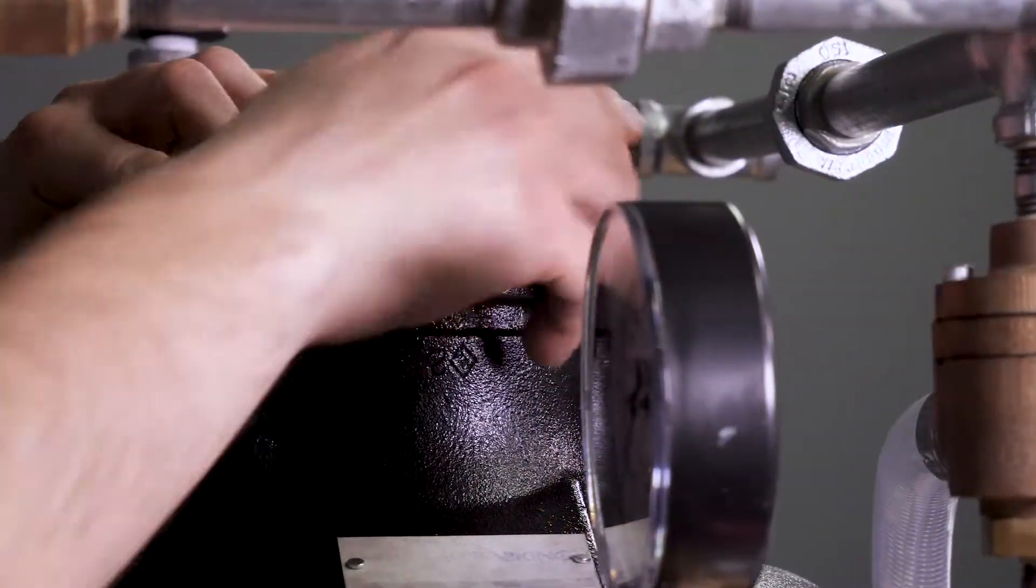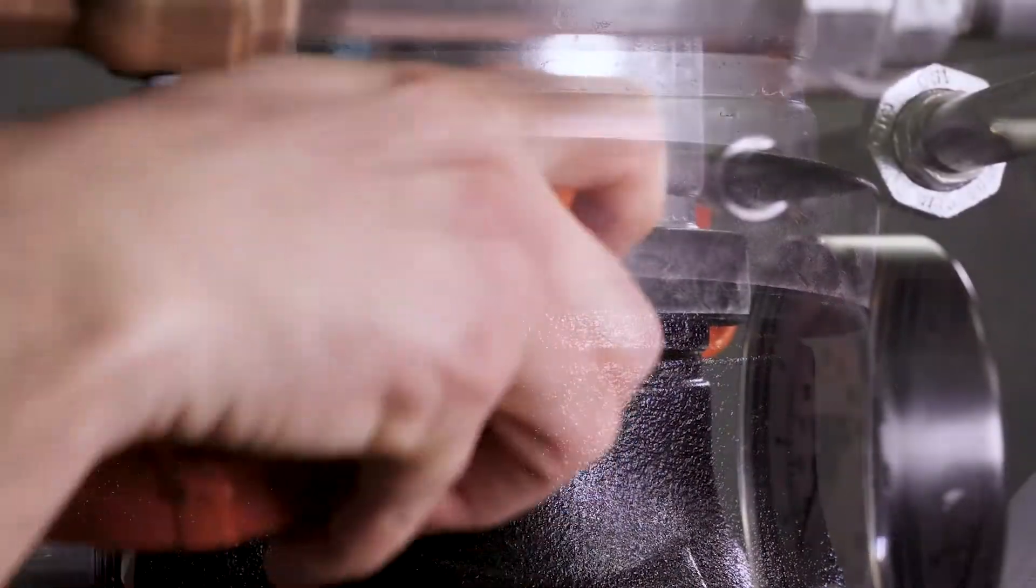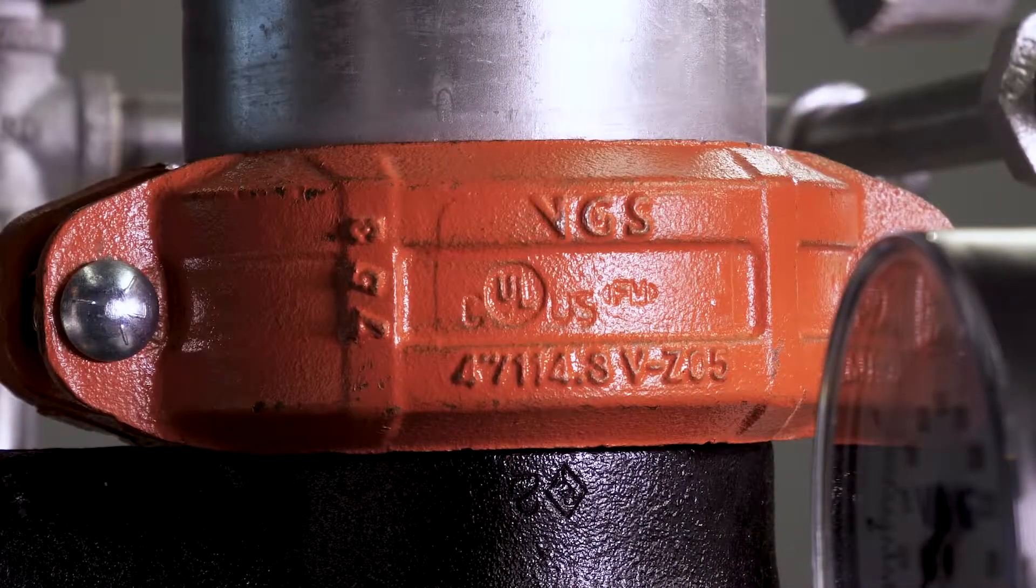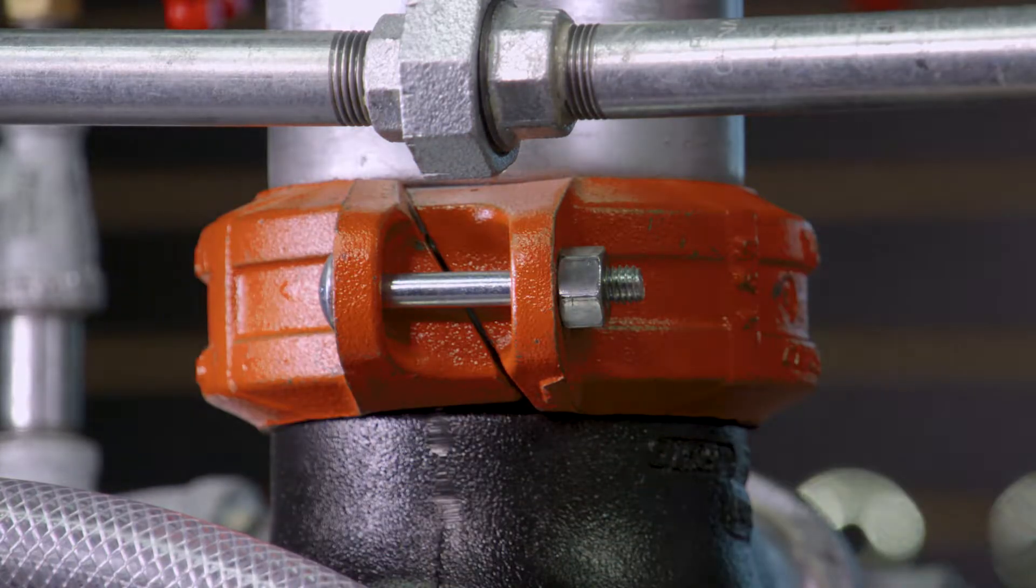We can now reinstall the couplings and the spool piece on top of the valve. Tighten the coupling until you have metal to metal contact on both sides of the coupling.